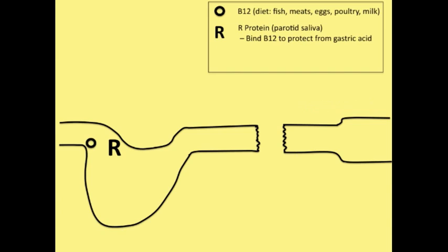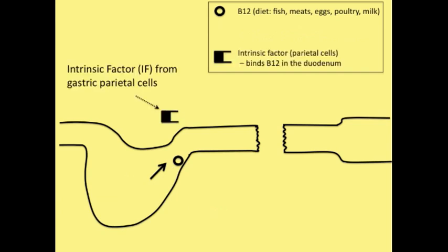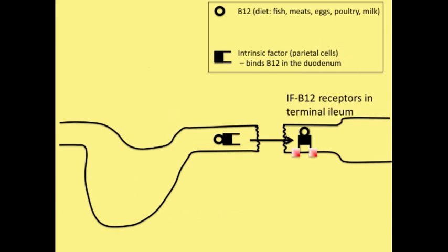Here we have the B12 coming from our diet. We have the R protein coming from the parotid saliva. The two join together, and R protein protects the B12 in the stomach from gastric acid. But then when you get into the duodenum, the pancreatic proteases degrade R protein. Now you can see that the B12 is free to unite with intrinsic factor, and that occurs in the duodenum. The B12 and the intrinsic factor complex travels down the duodenum, the jejunum, until we get to the terminal ileum, where they are uptaken by B12 IF receptors.